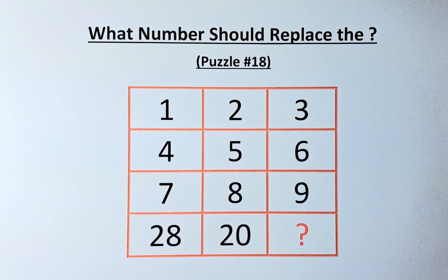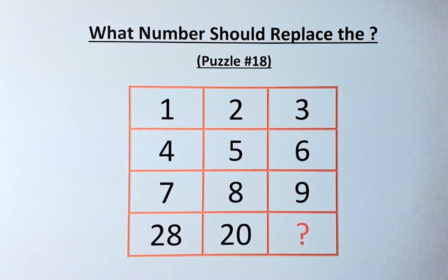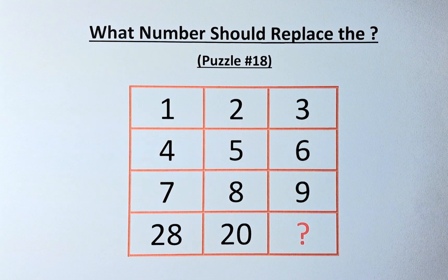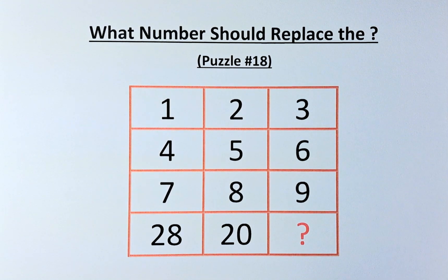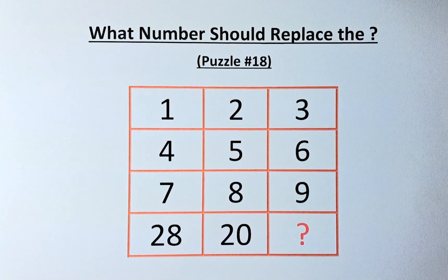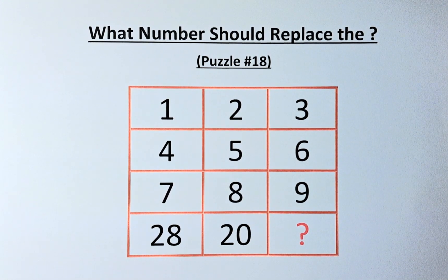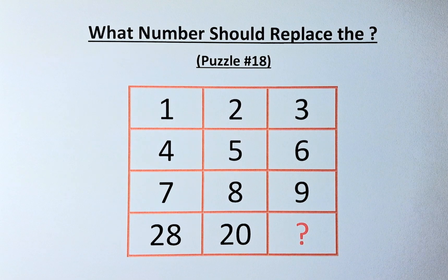The numbers in the puzzle are 1, 2, and 3 in the first row, 4, 5, and 6 in the second row, 7, 8, 9 in the third row, and 28, 20, and a question mark in the final row.